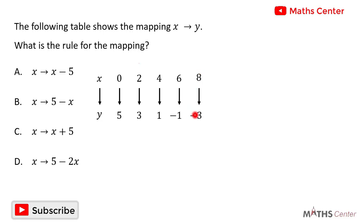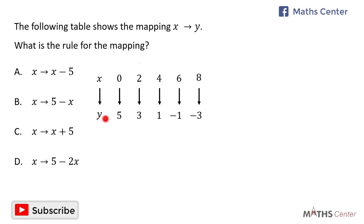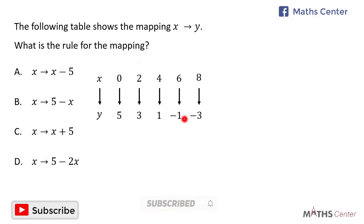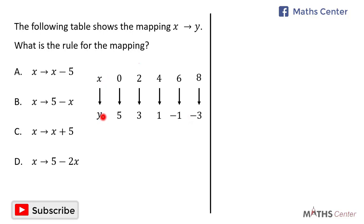And 8 gives us negative 3. The difference between consecutive x values is 2 each time. When we come to the y values, the difference between 5 and 3 is 2, between 3 and 1 is 2, between 1 and negative 1 is 2, and between negative 1 and negative 3 is also 2. Because the differences are the same, this is a linear mapping.